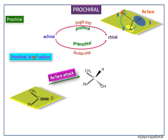Next we see what is si-face. A face is labeled si-face if, when looking at the face of the substituents at the trigonal atom arranged in decreasing Cahn-Ingold-Prelog priority order, they appear in a counter-clockwise order. Here we see how the incoming nucleophile attacks the sp2 carbon via the si-face, by attacking from below.